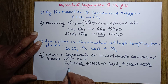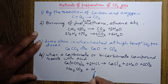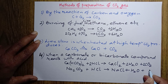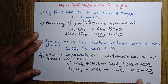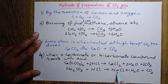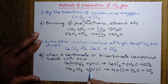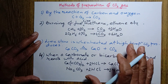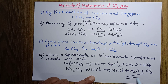Not only bicarbonate — carbonate also produces CO₂ when it reacts with acid. Let's take sodium carbonate as an example. When sodium carbonate reacts with hydrochloric acid, one product is sodium chloride, another is water, and another is carbon dioxide. To balance: hydrogen is 2, so we take 2 here; chlorine is also 2, so we take 2 here — and it is balanced. Whether it is bicarbonate or carbonate, if they react with acid, carbon dioxide gas is produced. These are the four major methods of preparation of carbon dioxide gas in the laboratory.